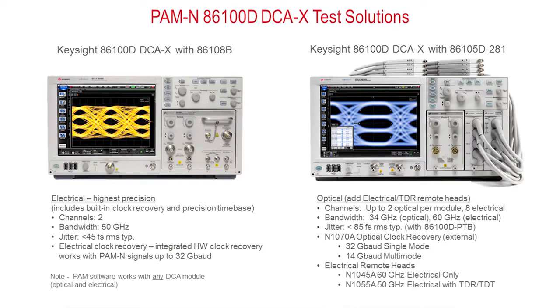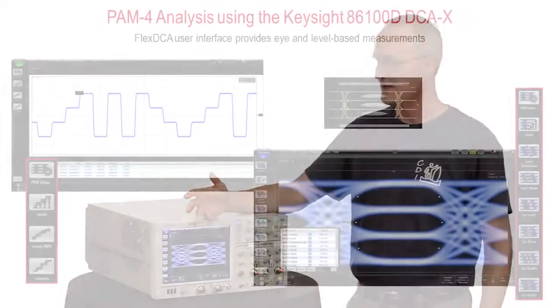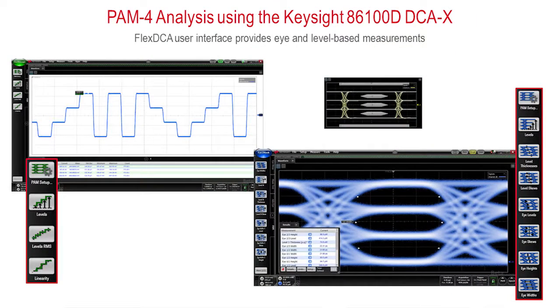Finally, in terms of making the analysis on the PAM-4 waveform, that's also quite simple. Essentially, what we have to do is give the DCA a slightly modified personality, a new measurement suite that is PAM-4 aware. With PAM-4, there's a license that we install as well as a firmware upgrade that gives it a new set of PAM-4 measurements.